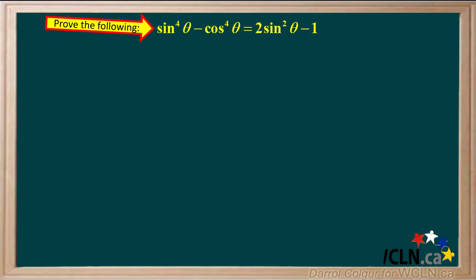We're asked to prove that sine to the fourth theta minus cos to the fourth theta is equal to two sine squared theta minus one.